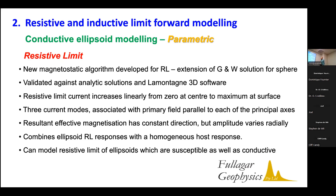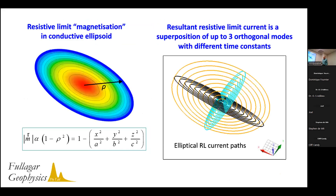The effective magnetization is constant in direction but varies radially in amplitude. In the program, the resistive limit response is combined with a homogeneous host response to take some account of background effects. We can also account for susceptibility — if you have a body which is both conductive and susceptible, we can take that into account. This illustrates the magnetization in a long ellipsoid in the resistive limit: it increases from zero at the boundaries to a quadratic maximum in the center, with elliptical current paths.